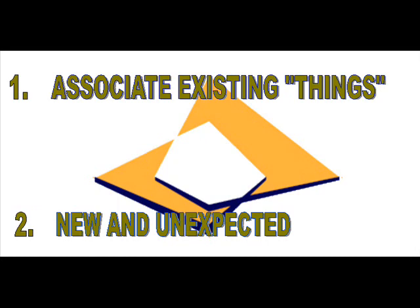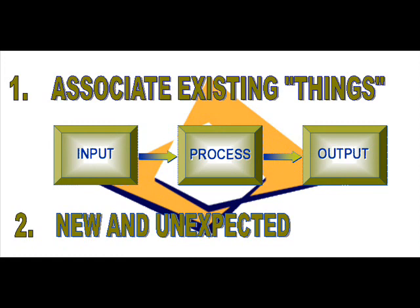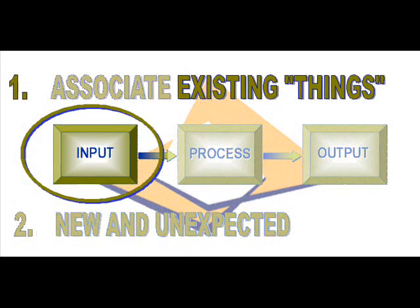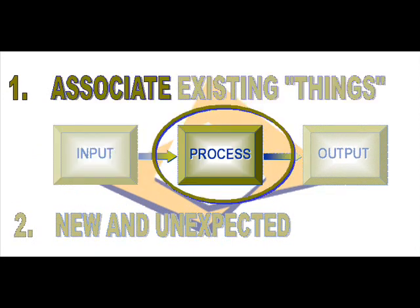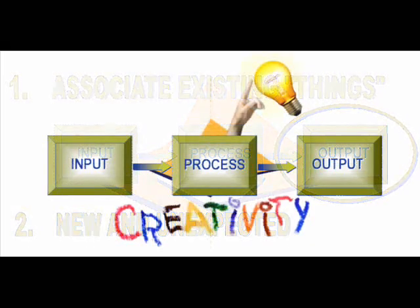We also know that not everything we do will be considered creative. To qualify as creative, an idea must be new and unexpected. So we now know that IOP technology is going to apply. Creativity requires the input of things — things that somehow must be associated to produce a novel and unexpected outcome.